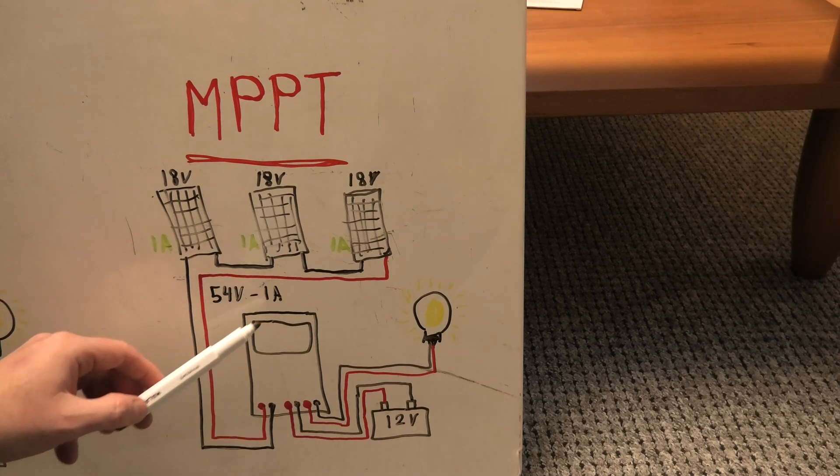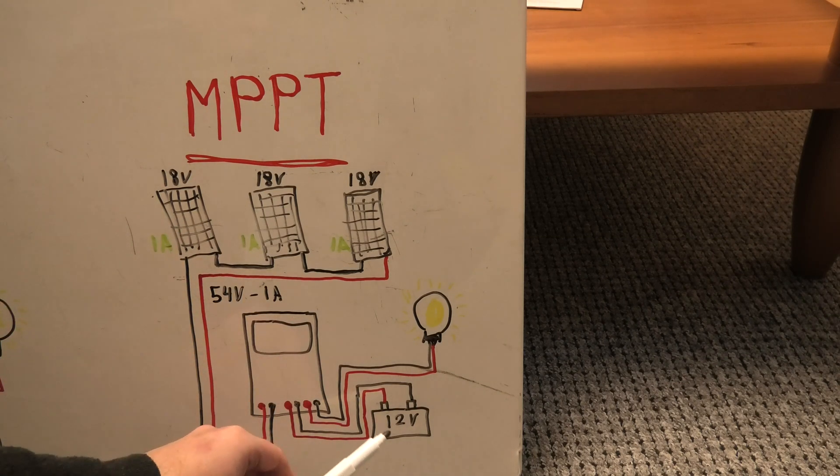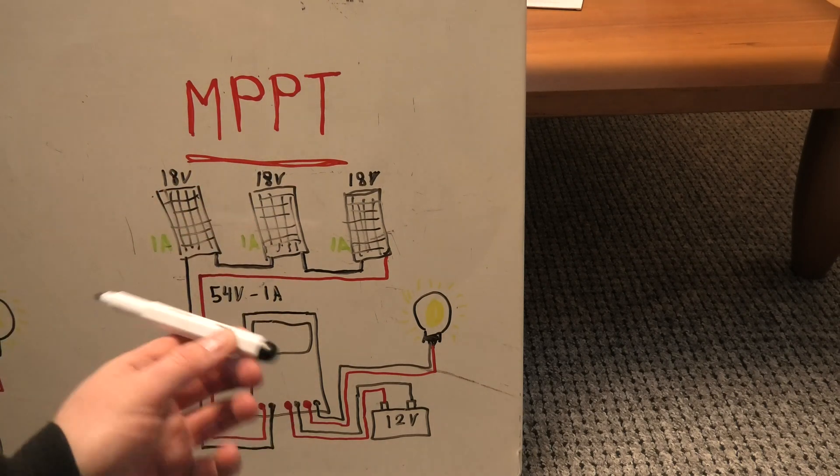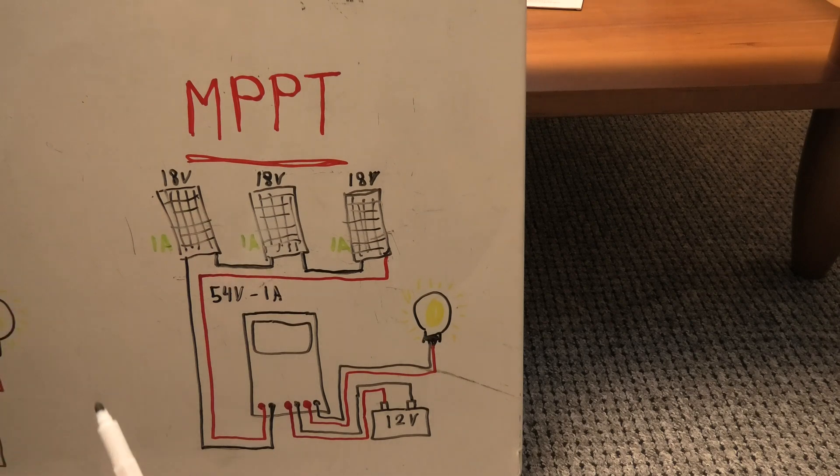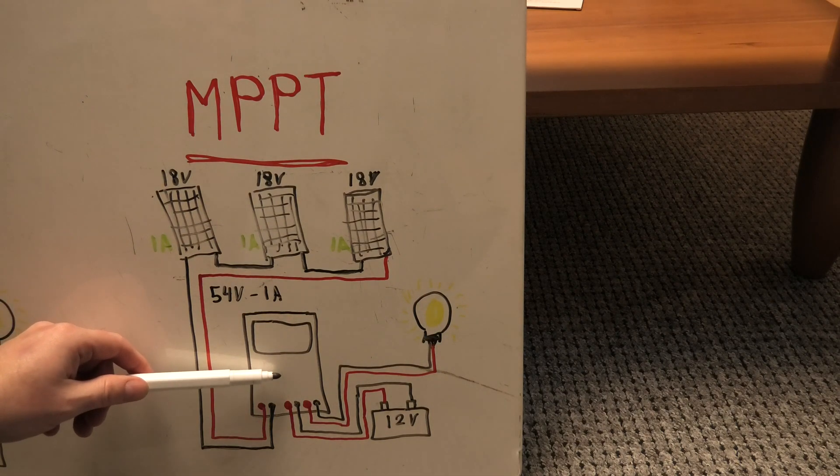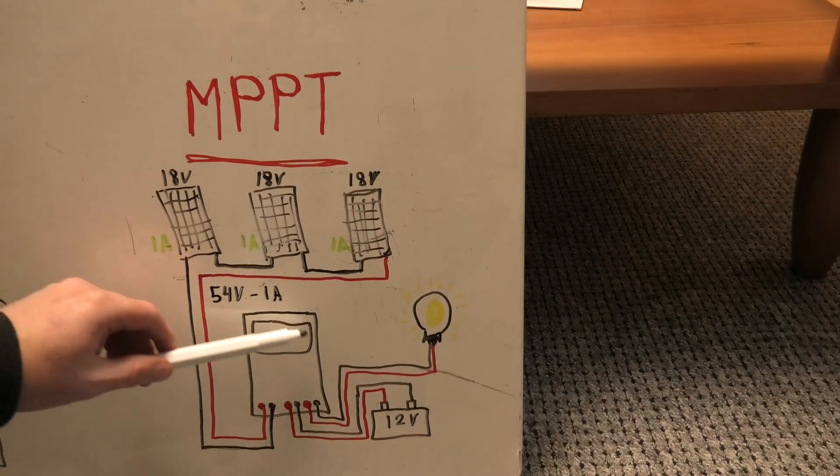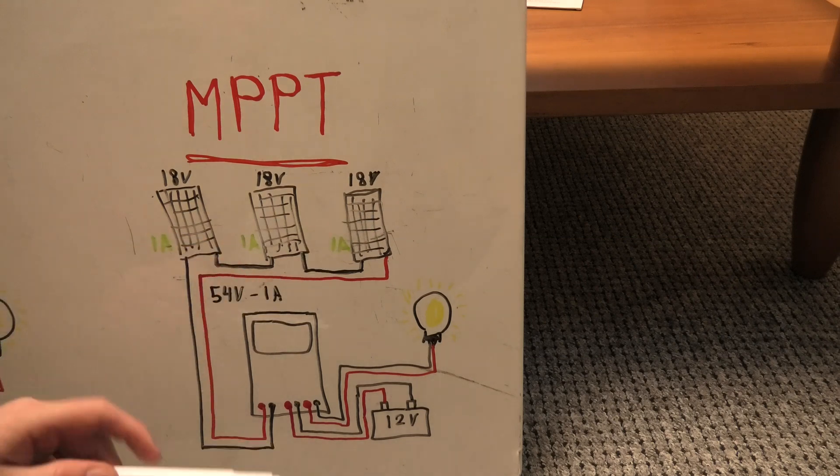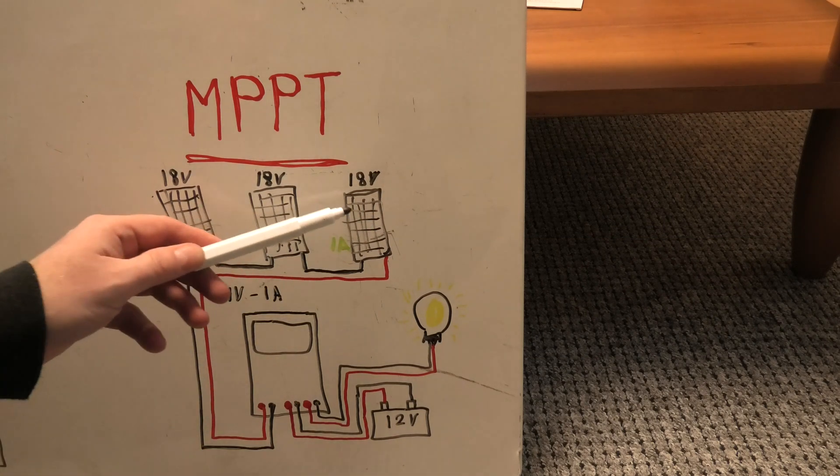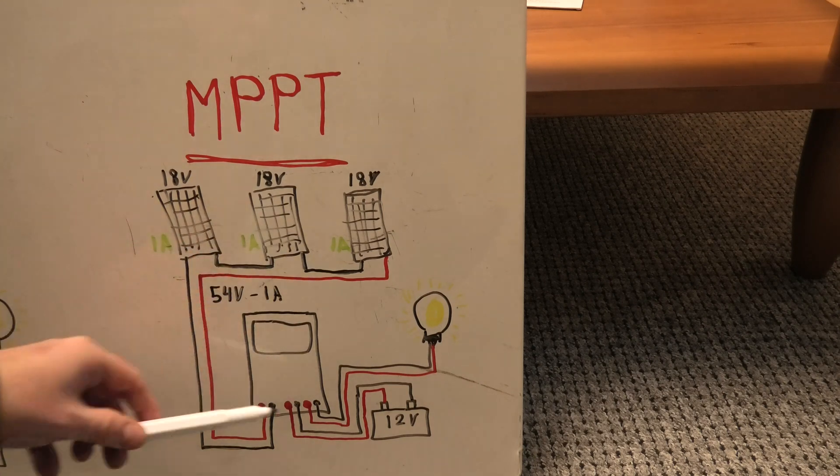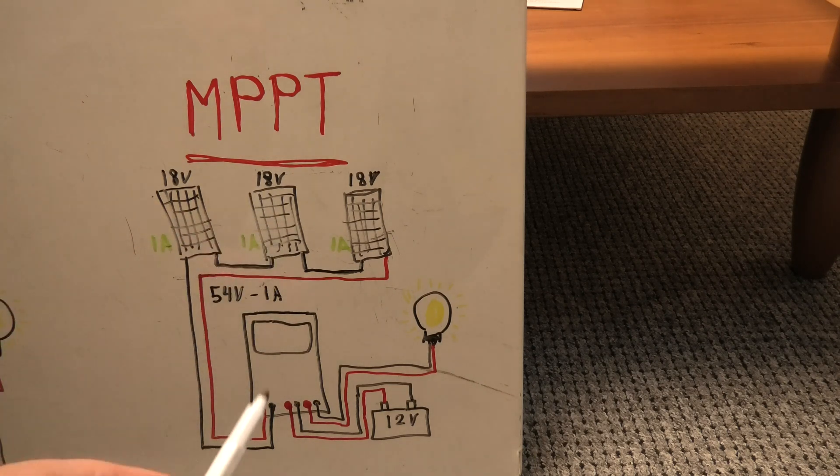And the charge controller will take that voltage, and it will make it into 12 volts. For this setup, I would probably go with the other solution, just because this charge controller is more expensive. And instead of getting this more expensive charge controller, I could purchase one more panel here. And with one more panel, I would get more power. And I would get more power than this would be better than the other system.